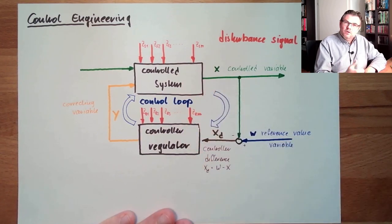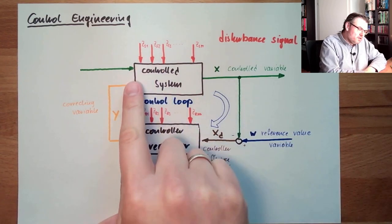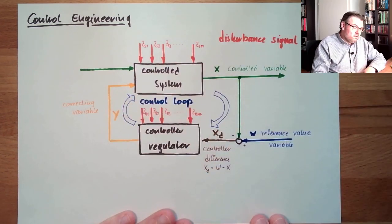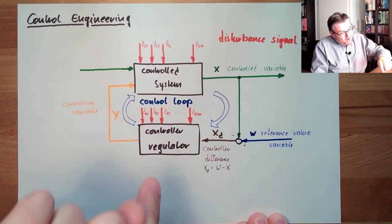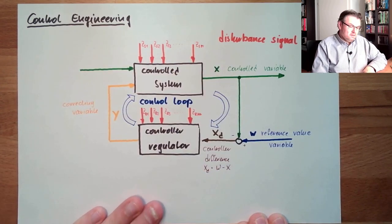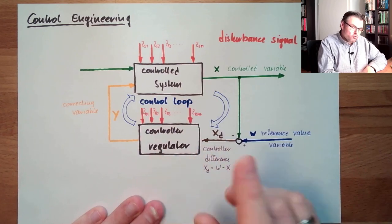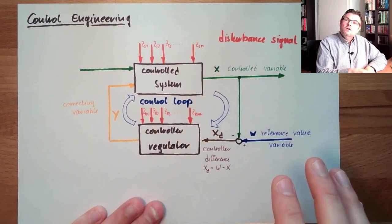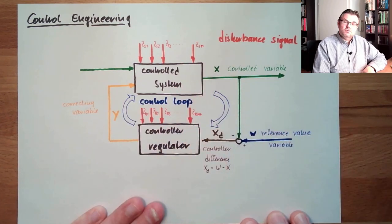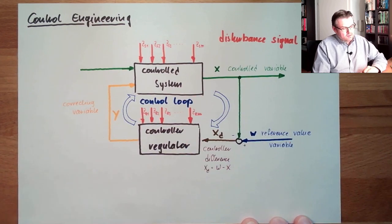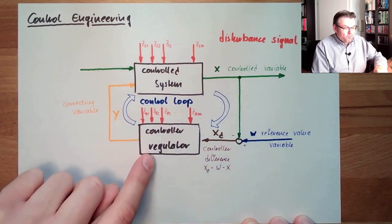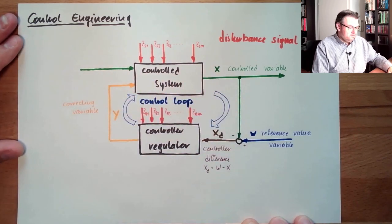What is the control system? The control system is that part where the influencing of the controlled variable is taking place. The controller is the other part, and all together forms the control loop. So the control system is where the influencing of the controller on the controlled variable takes place.